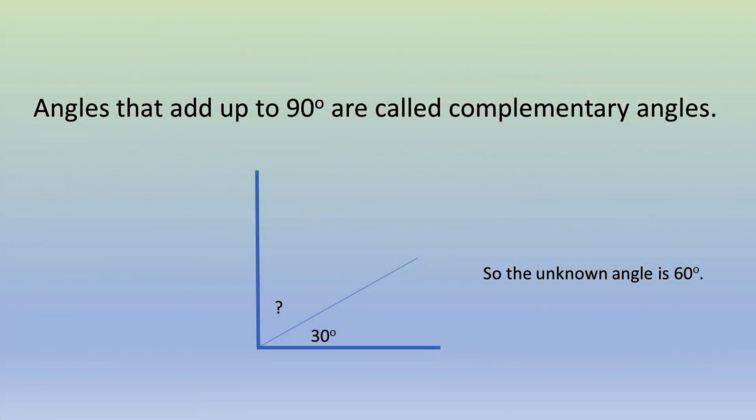Angles that add up to 90 degrees are called complementary angles. So the unknown angle is 60 degrees. Let's check that.